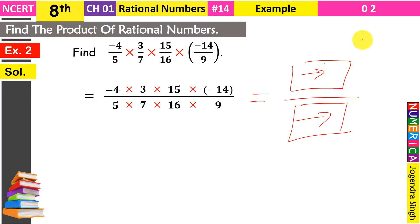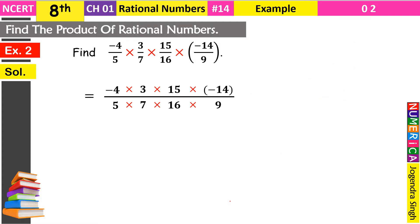काफी बड़े numbers हो जाएंगे, जब इनको cut करने की बारी आएगी तो बहुत मुश्किल होगी। तो इसकी requirement ही क्या है कि हम पहले multiply करें फिर cut करें? हमें directly cut करने की permission मिल रही है। साफ दिख रहा है कि numerator और denominator में जो चीजें हैं, अगर वो किसी number से divide होती हैं, तो directly cut कर दो।